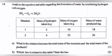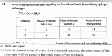Question 14: Analyze the equation and table regarding the formation of water by combining hydrogen with oxygen. A. What is the relation between the total mass of reactant and the total mass of product? B. Which law is related to this? State the law. Answer: A. Both are equal. B. Law of conservation of mass. In a chemical reaction, the total mass of the reactant will be equal to the total mass of product.